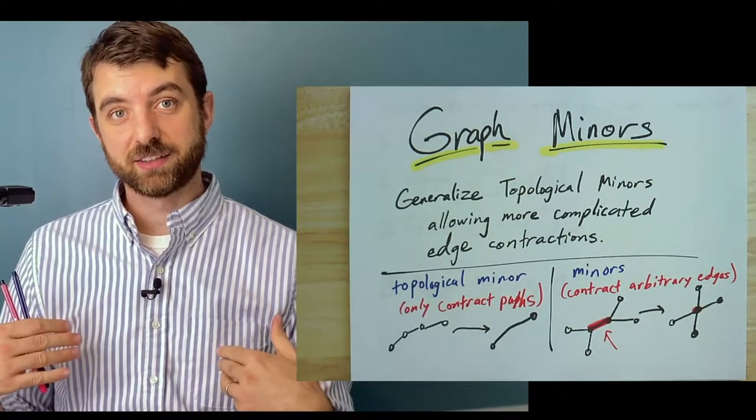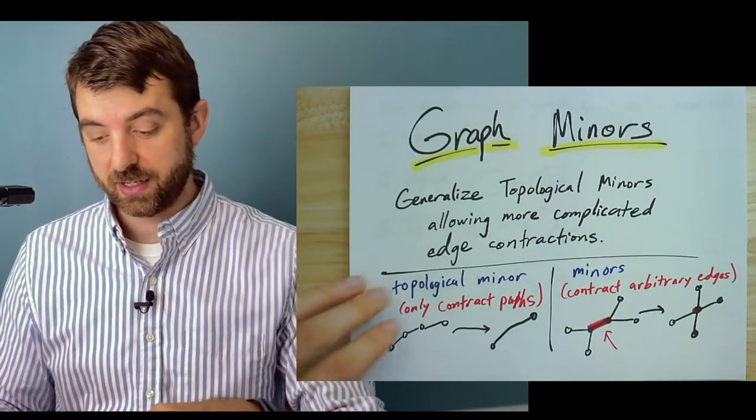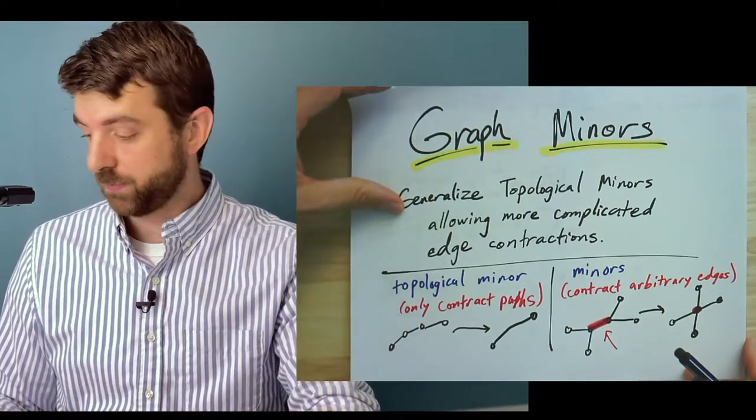So when we contract things, contract edges, we get a minor.